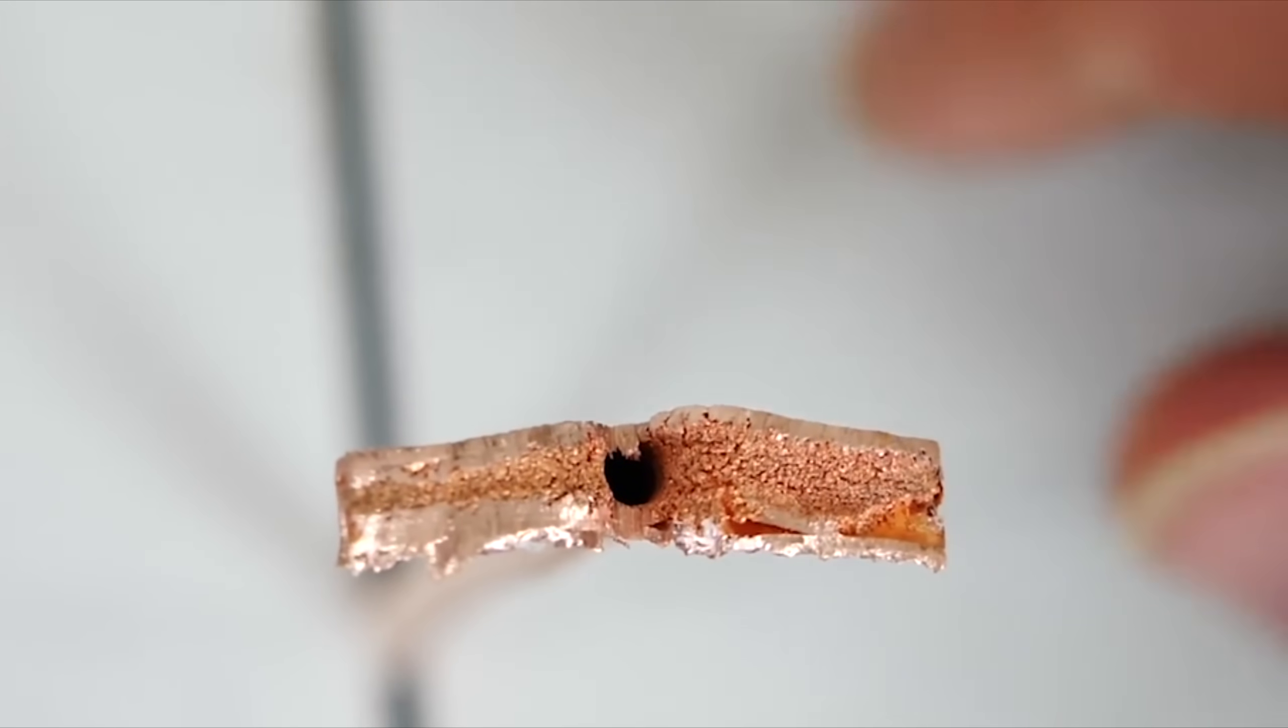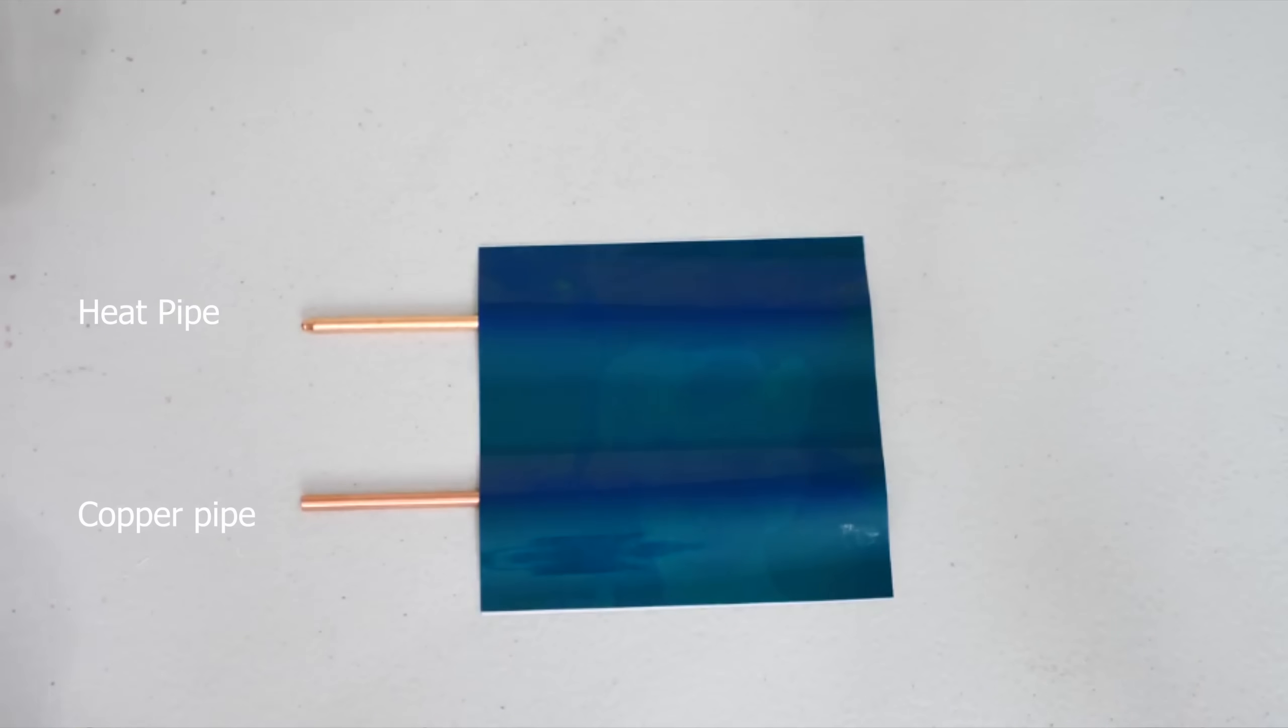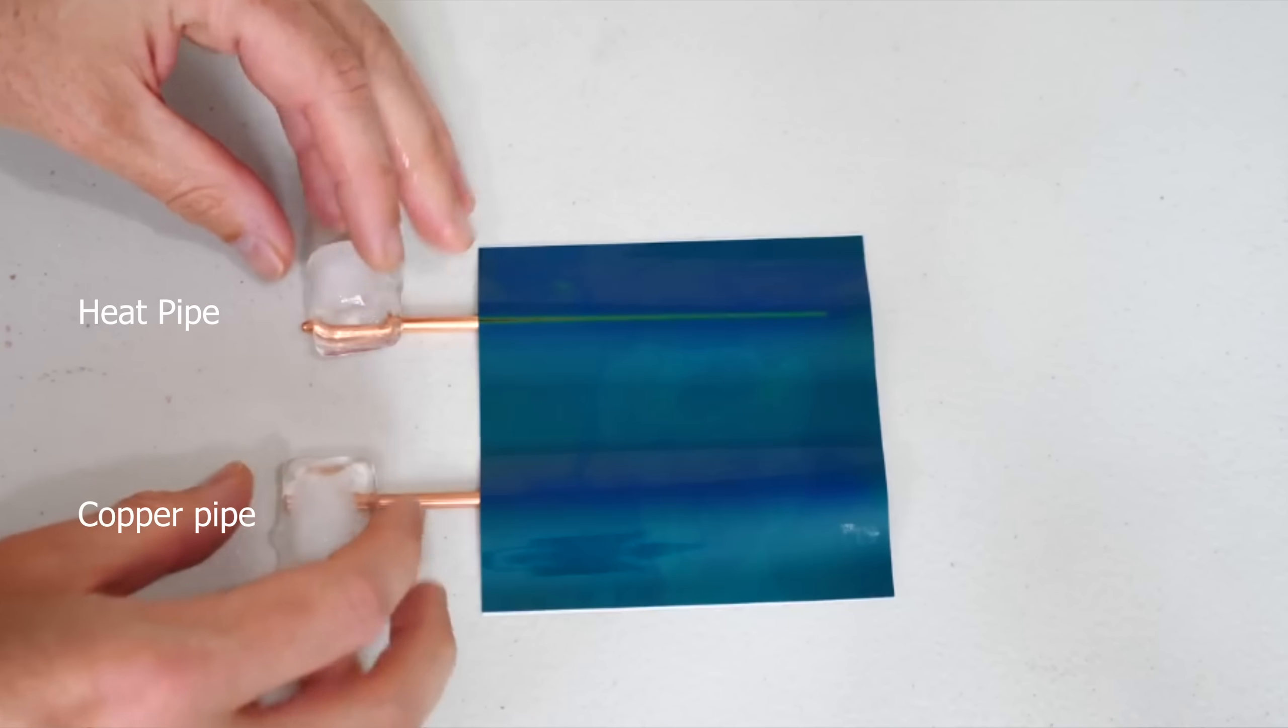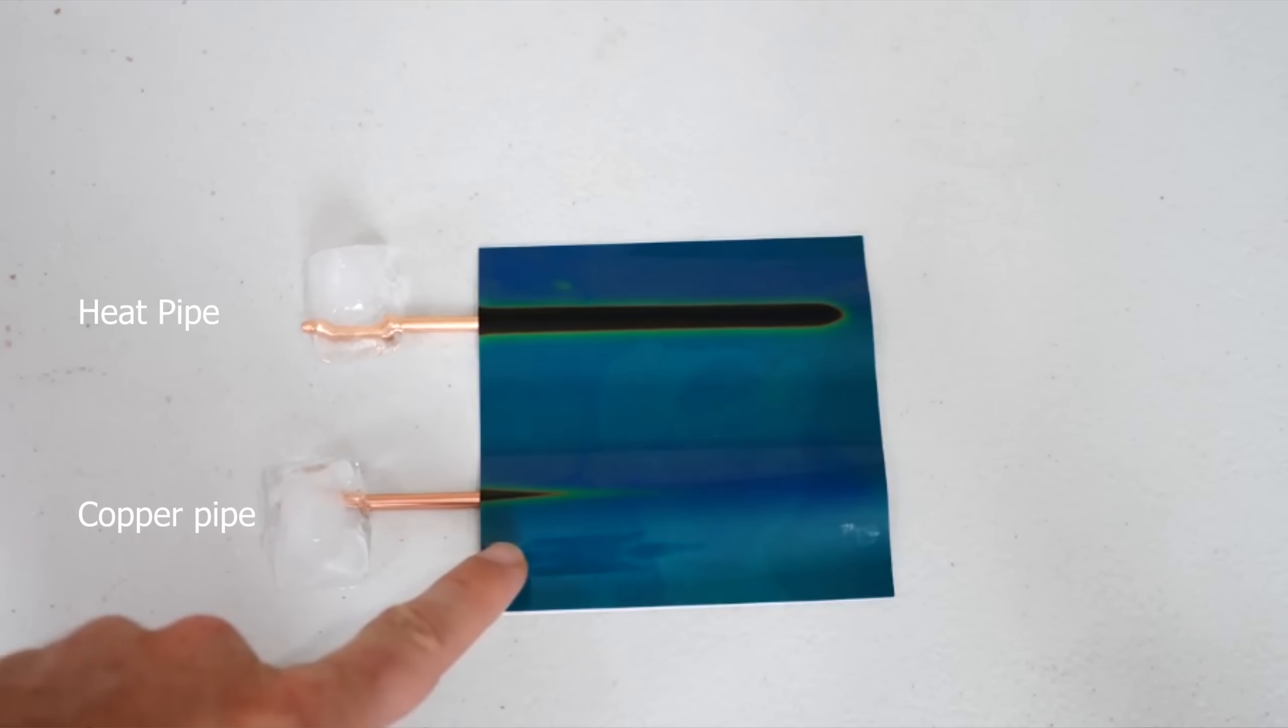And the reason that that's in there is because inside of this there is actually a little bit of water. So then how this heat pipe actually works is it's made of copper, and so you still get the copper conduction itself, but the magic comes from the water vapor inside of it.